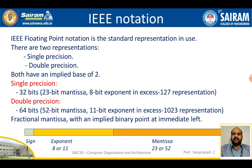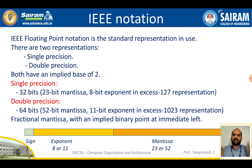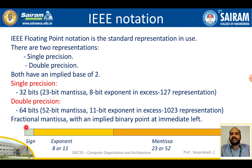In a 32-bit single precision format, from the LSB to MSB: bits 0 to 22 (23 bits) are the mantissa, the next 8 bits (bits 23–30) are the exponent, and the most significant bit (bit 31) is the sign bit.